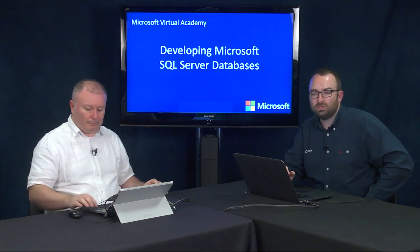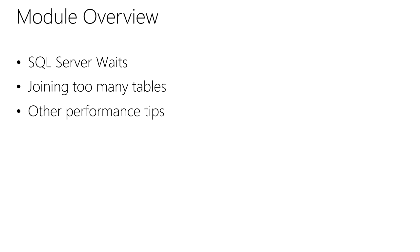For this module, what I wanted to really talk about is a few things around optimizing and troubleshooting tips. The first thing I wanted to talk about is SQL Server waits and the concepts and architecture that supports the idea of a wait. Then we'll talk through a specific scenario around joining too many tables and why that's a bad idea in terms of how the optimizer works. Finally, we'll consolidate some other performance tuning tips that have been sprinkled around these six modules.